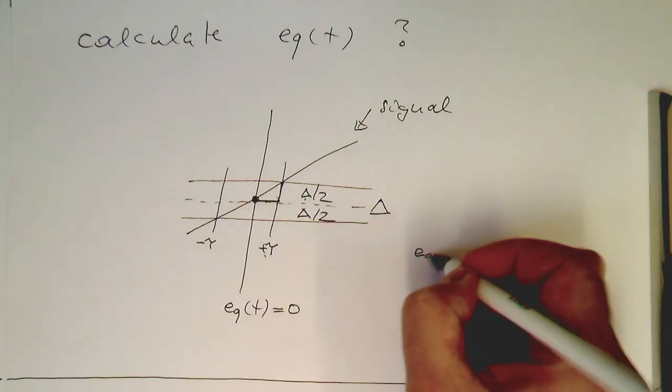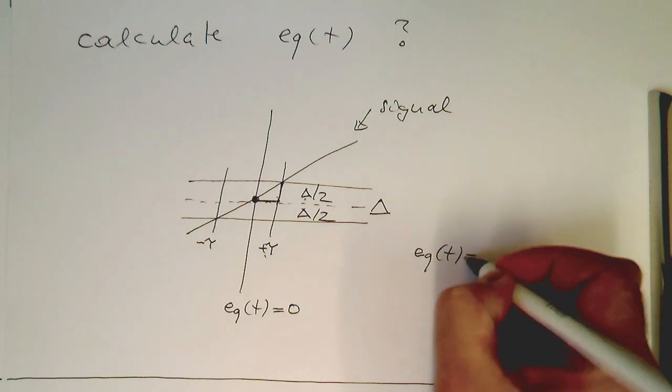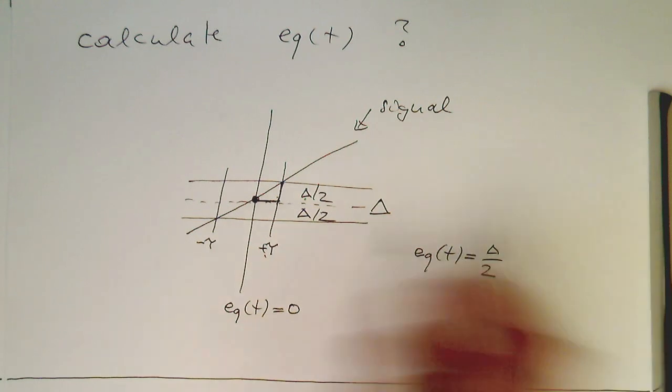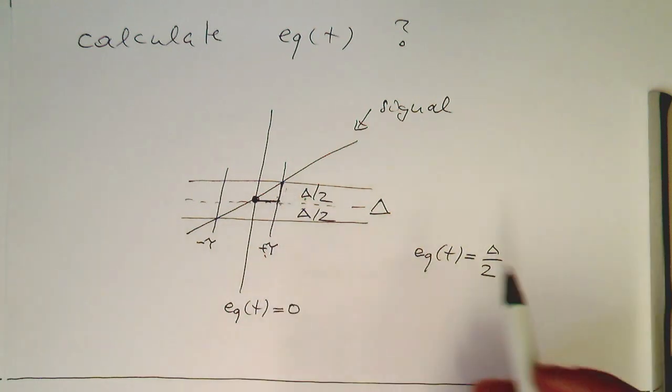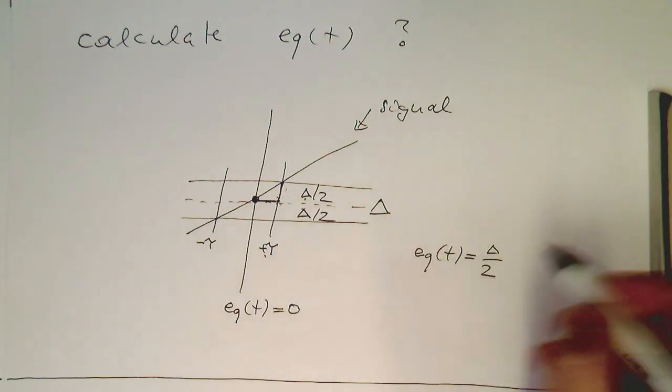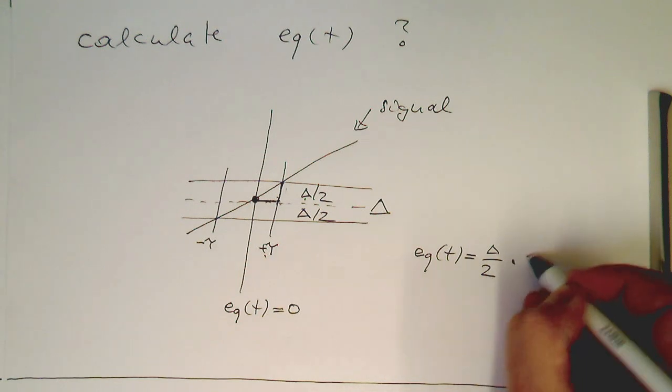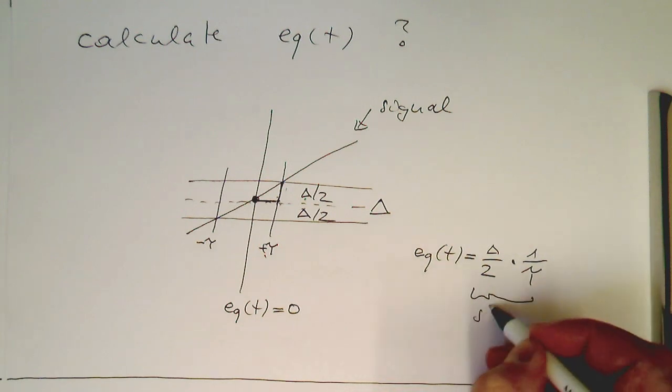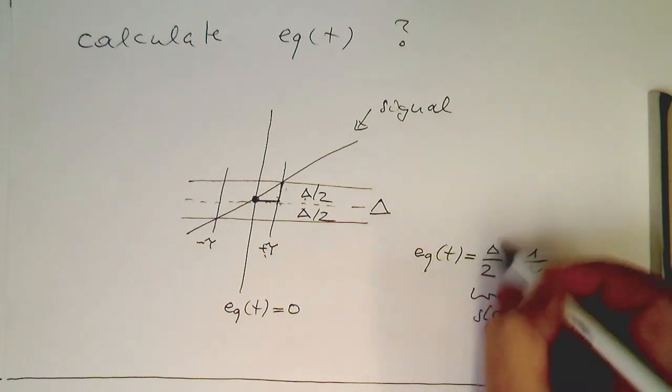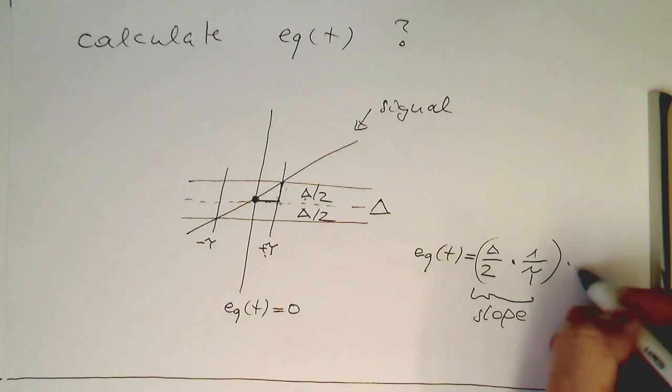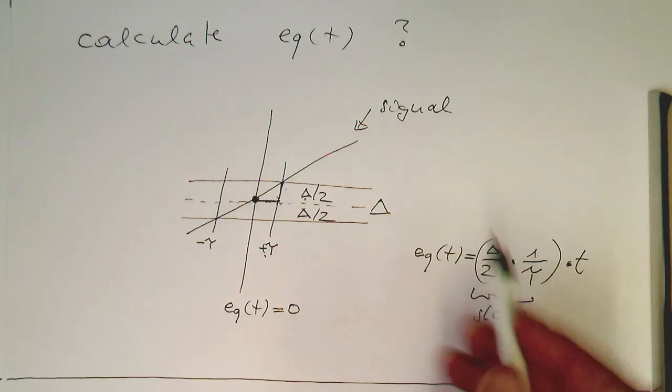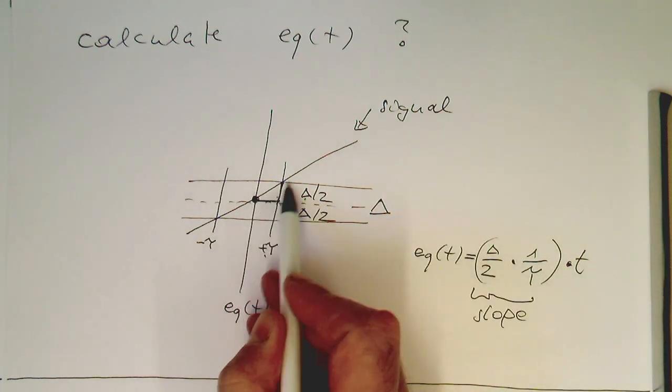The slope here from zero to plus tau is just Delta half. So e_q of t is then just Delta half, that's the y bit here, multiplied by one over tau, which gives us the slope, and then multiply this by t. That's our momentary error. It's obviously zero here and then goes linearly up.